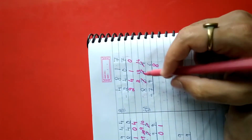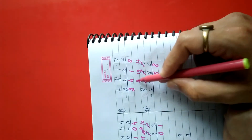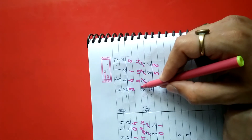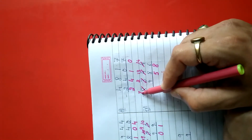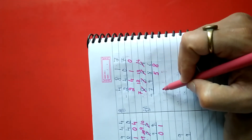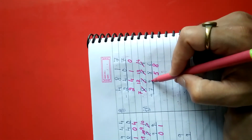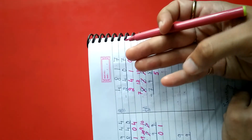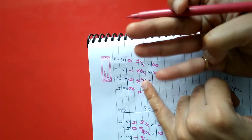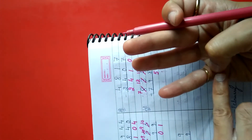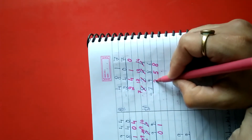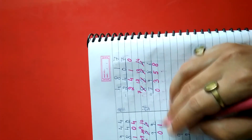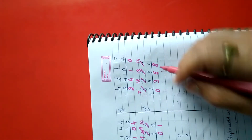Now, 2 minus 9: 9 can't go, so we borrow. 8 becomes 7 and 2 becomes 12. Counting after nine — ten, eleven, twelve — three lines, so 12 minus 9 is 3. Then 7 minus 7 is 0. So our final answer is 358.